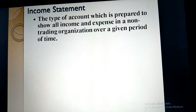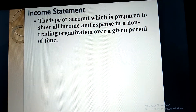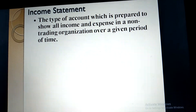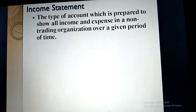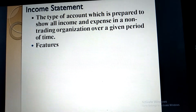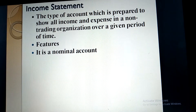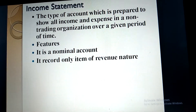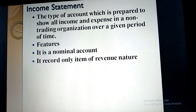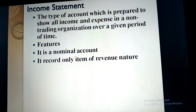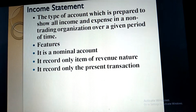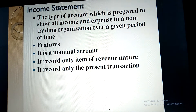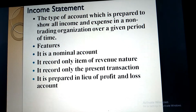Our next account is the income and expenditure account. What do you mean by income and expenditure account? It is the type of account which is prepared to show all income and expenditure in a non-trading organization over a given period of time. Feature one: it is a nominal account whereby we debit all expenses and credit all income. Feature two: it records only items of revenue nature, like rent expenses, telephone expenses, etc.